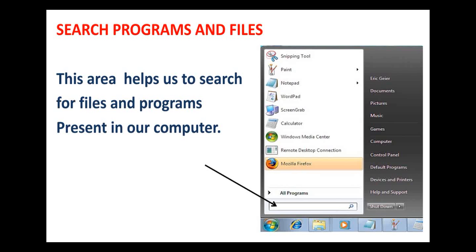You can also see an option that says 'Search programs and files.' In this box, you can type the name of the program or the file that you want to search. This helps us to make our work faster. If you don't want to scroll for the program or file in your program menu, this is one very easy way to search.